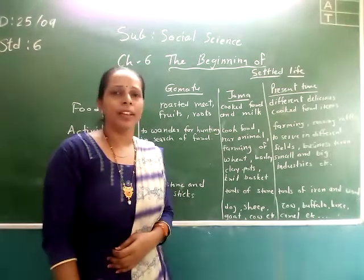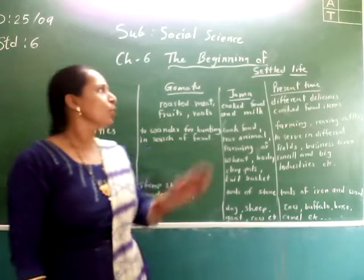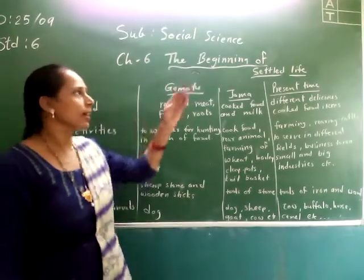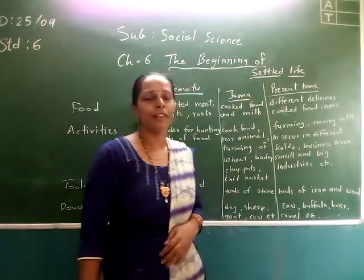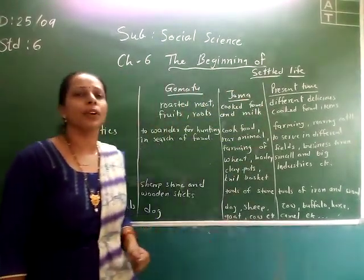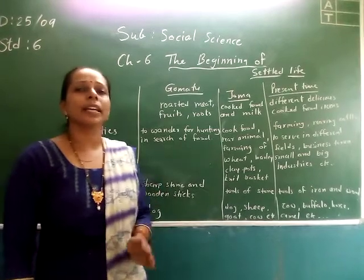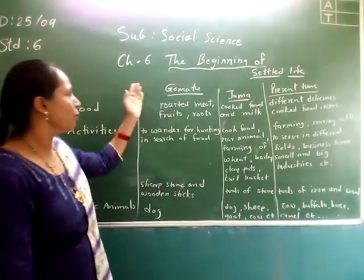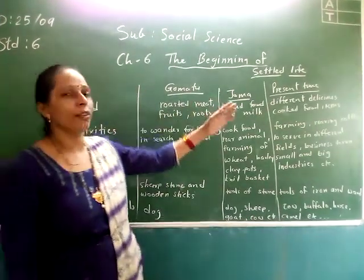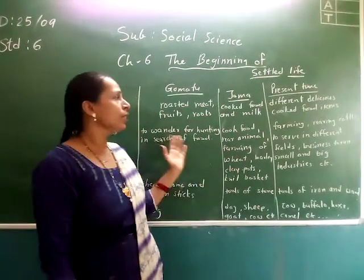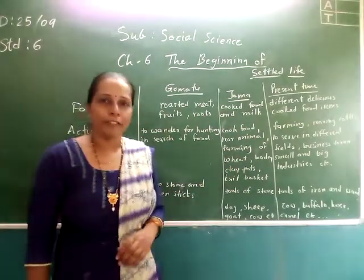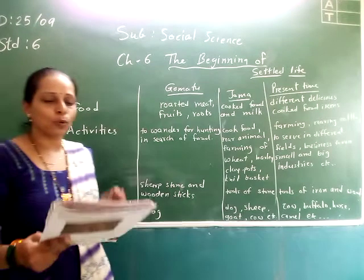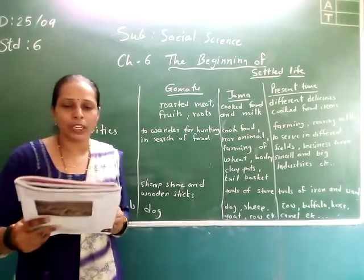Hello students, good morning. Let's continue with Chapter 6 in Social Science, the beginning of settled life. In the previous video, we studied about the life of Zotu and the life of Jonah, and we also saw the difference between their lives. Here is a table in your textbook, page number 32.